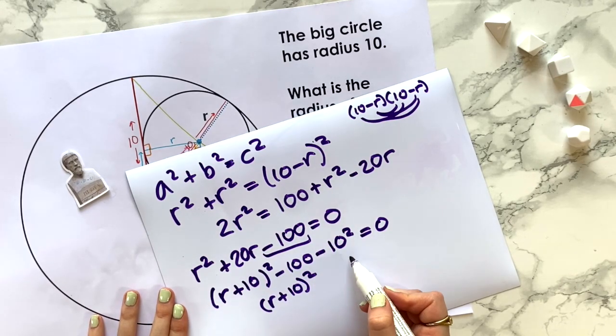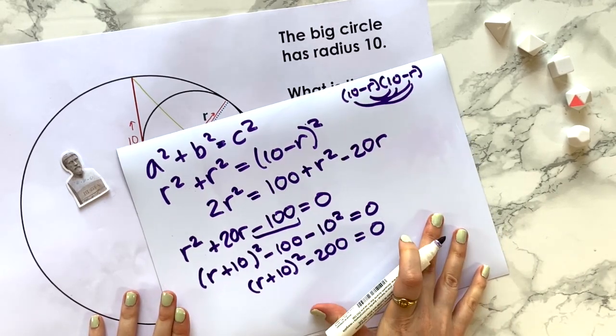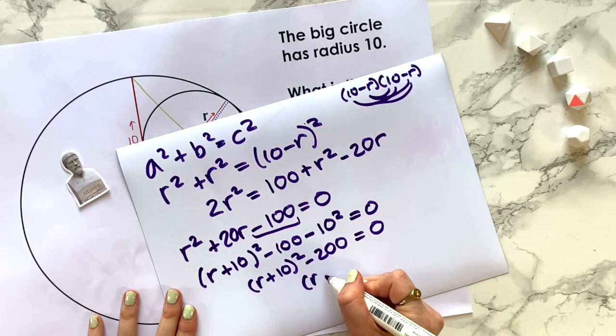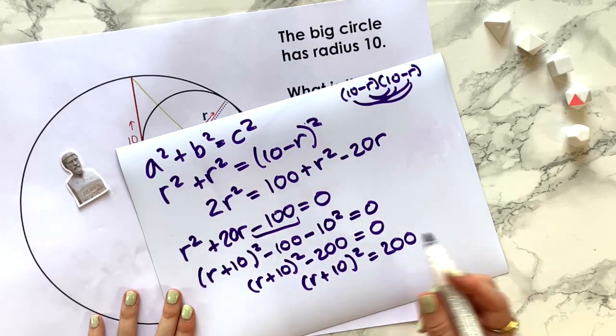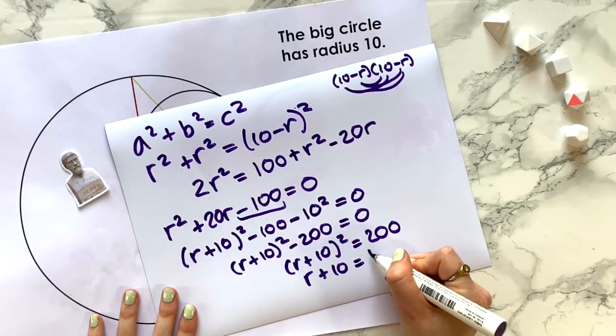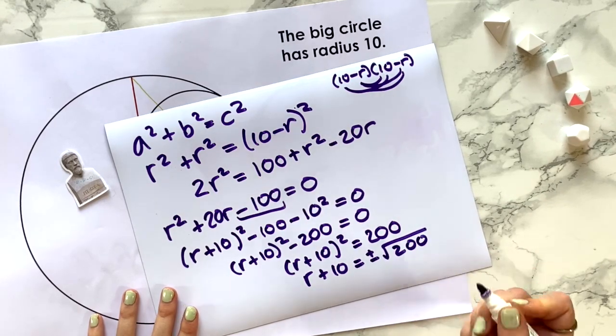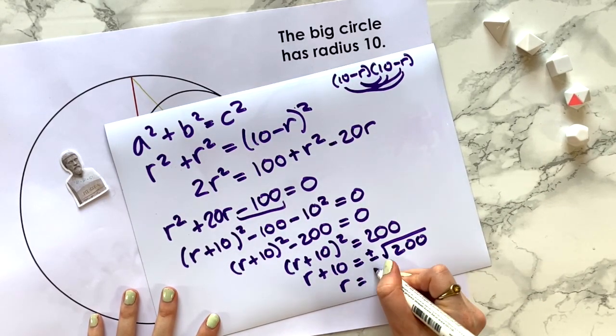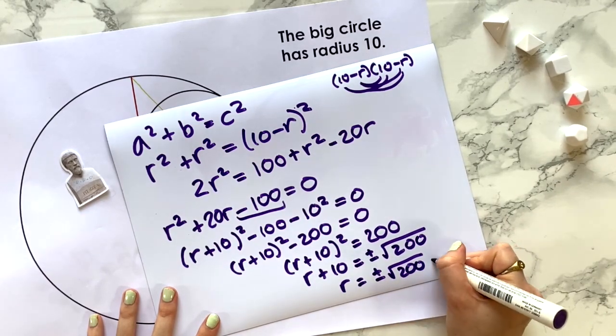10 squared is 100, so that together would be -200 equals zero. Rearranging: (r + 10)² = 200. And I think we can solve this. So we have r + 10 = ± √200. So r = ± √200 - 10.